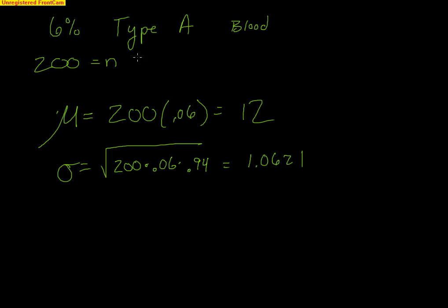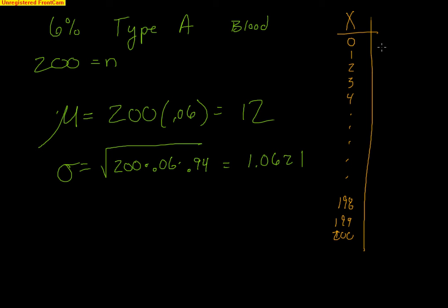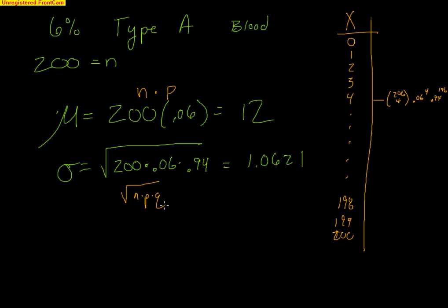I want to remind you why we have this formula. If I didn't use it, here's how you'd get those numbers: you'd have to make a probability model listing 0 people through 200 people with type A blood, find the probabilities of each — for 4, that'd be 200 choose 4 times 0.06 to the 4 times 0.94 to the 196 — do that for all of them, then run a one-variable stats with L1 and L2 to get mean and standard deviation. Only under a binomial model do you not have to do all that — just n times p and the square root of n times p times q.